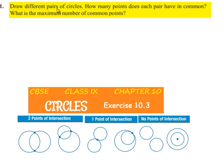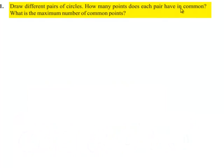Coming to the first question: draw different pairs of circles. How many points does each pair have in common? What is the maximum number of common points?